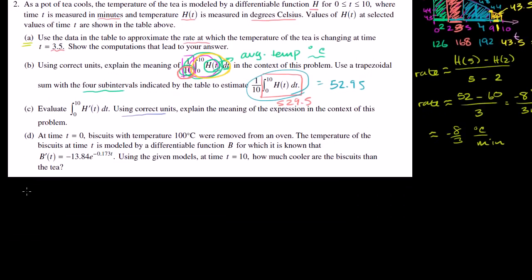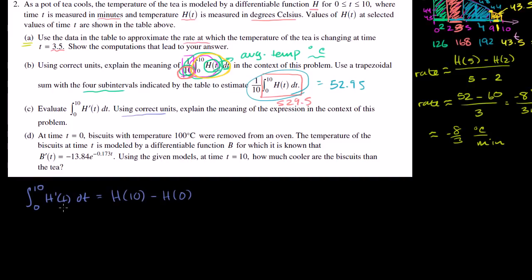If we want to evaluate this definite integral from 0 to 10 of h prime of t dt, this is just the same thing as evaluating the antiderivative of this, which is h of t, evaluated at 10 minus h of t evaluated at 0. This is the second fundamental theorem of calculus — exactly how we evaluate definite integrals.